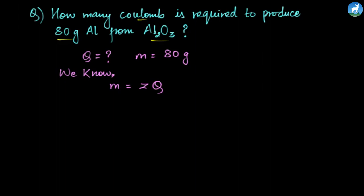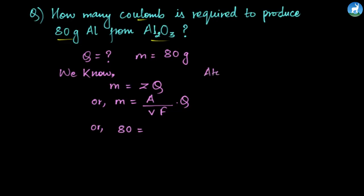Using Faraday's Law of Electrolysis: M equals ZQ. We can further modify Z as atomic weight by valence into F. So the equation becomes M equals A by VF into Q. Now we need the atomic weight of aluminum.